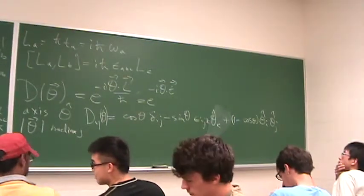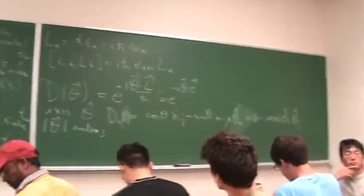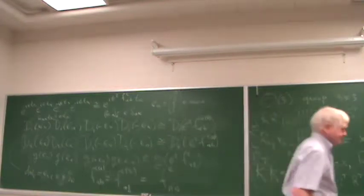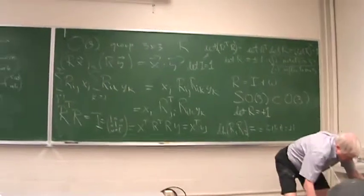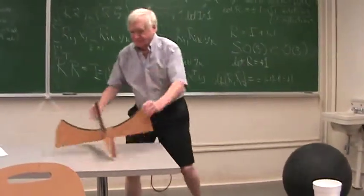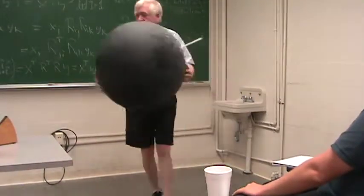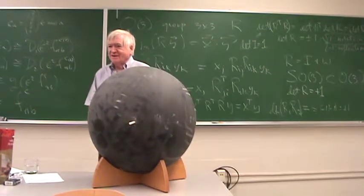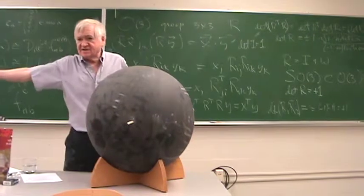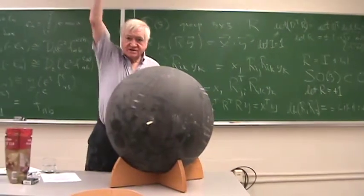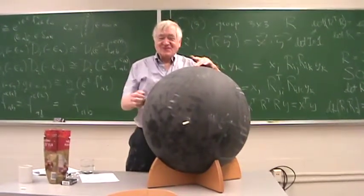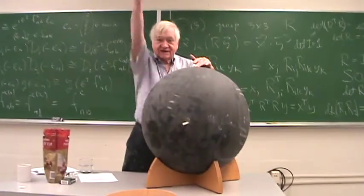All right, now I'm going to try to demonstrate these commutation relations. Actually, good one. All right, first I'm going to put this here. Now, let's adopt a Euclidean coordinate system, X, Y, Z. Z is usual, it's a federal law, it has to be in the vertical direction. X is going to be out this way, X, Y, Z.